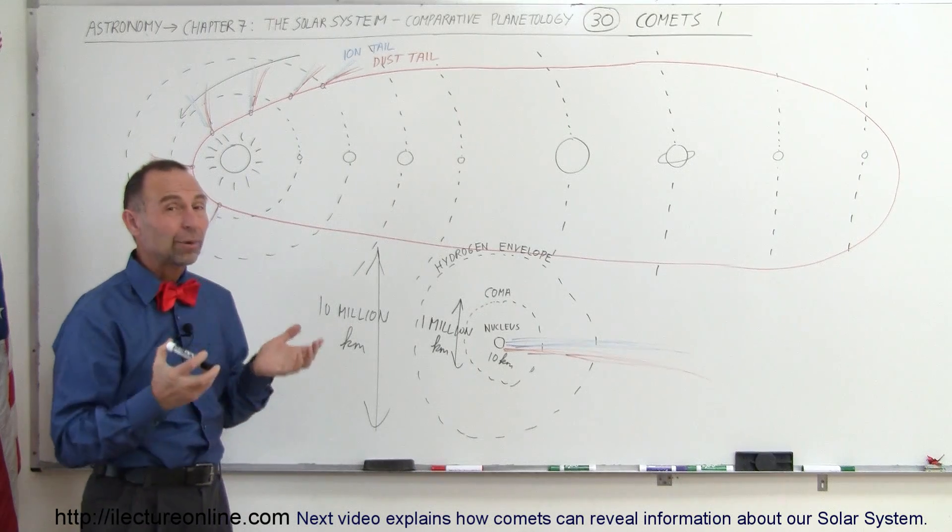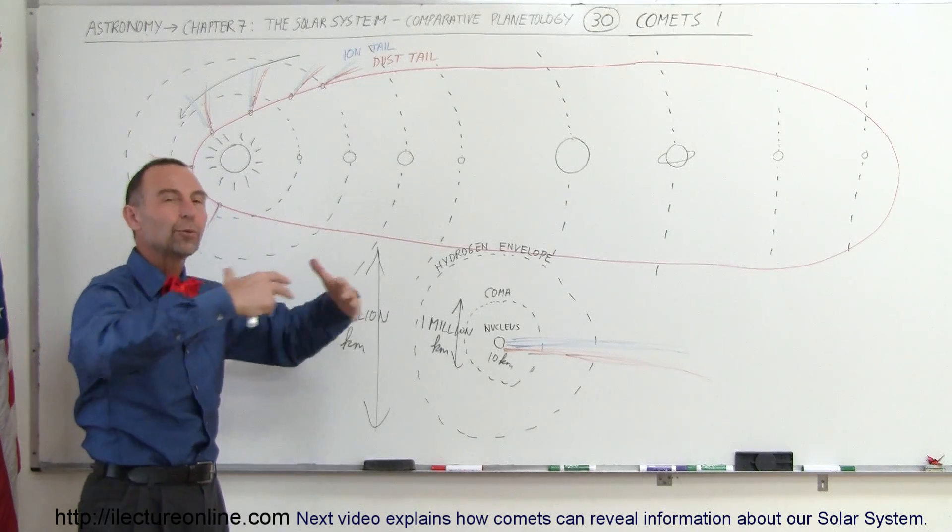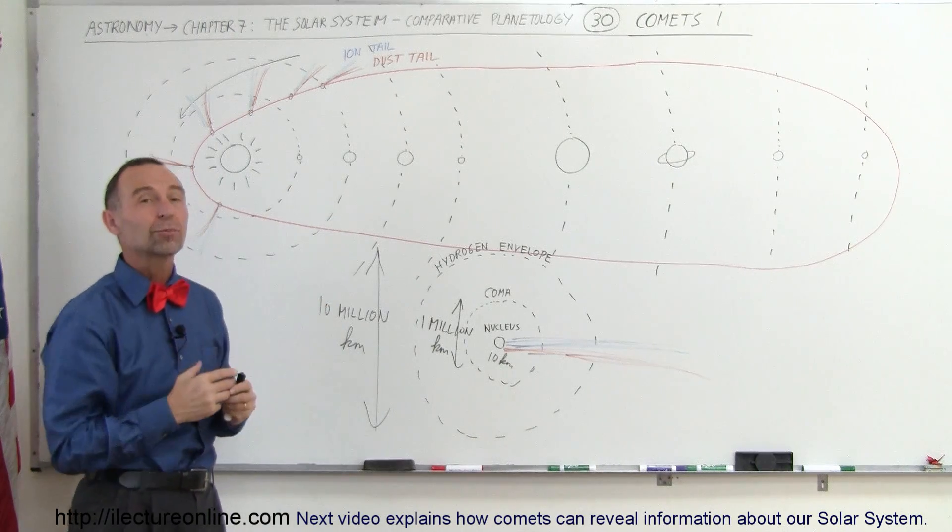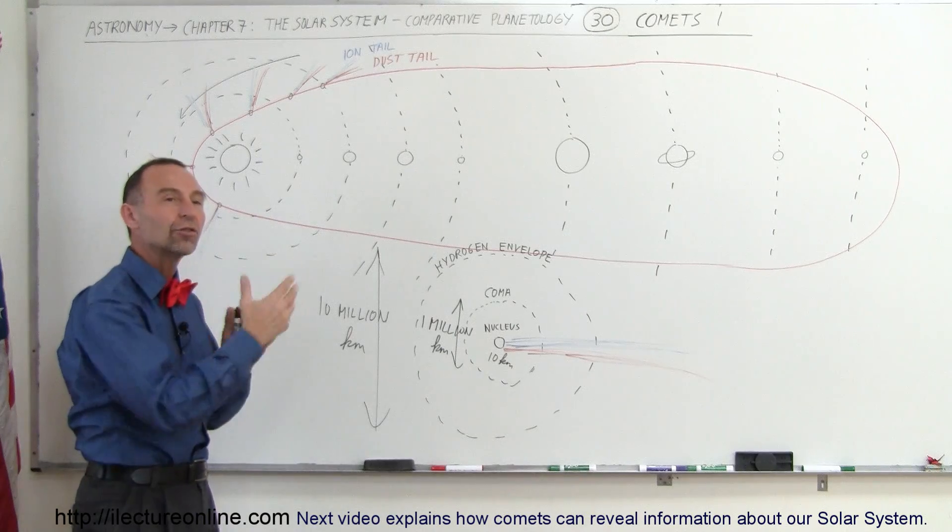Those are probably left over from the very beginning of the formation of the solar system, when the ices were driven way out to the outer reaches of the solar system, and then because of the gravitational interaction between them, and perhaps sometimes a star coming close by will knock those out of orbit,